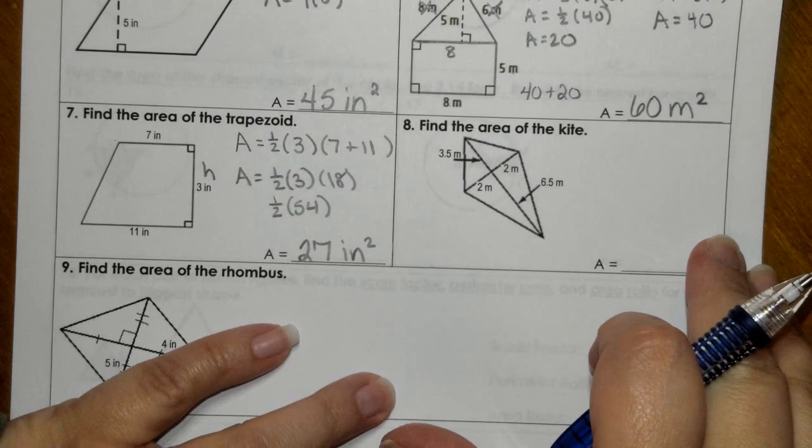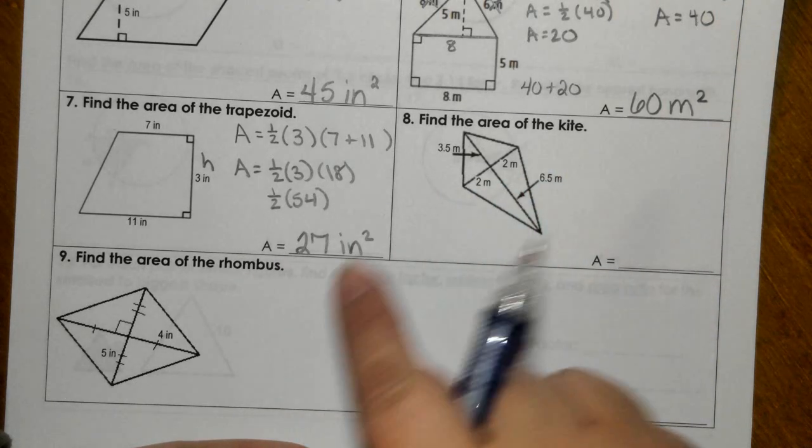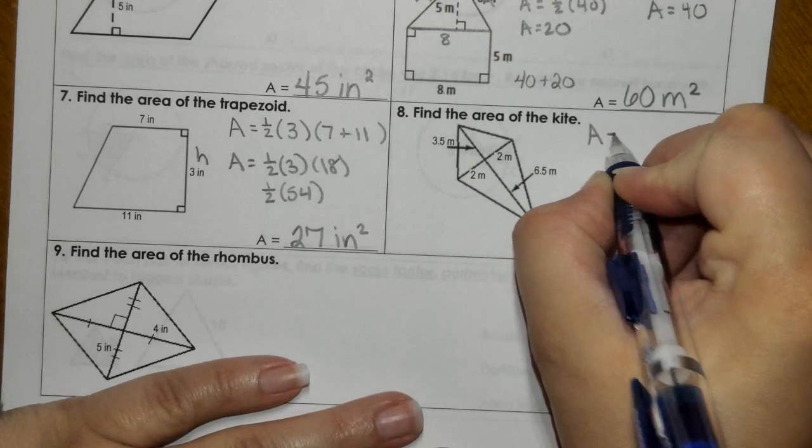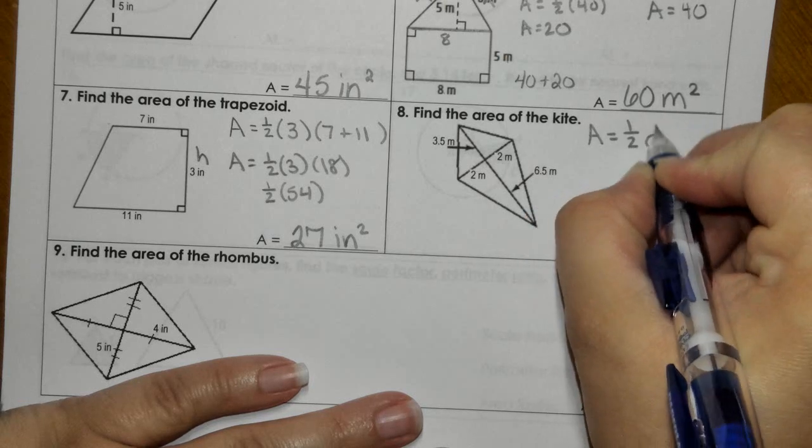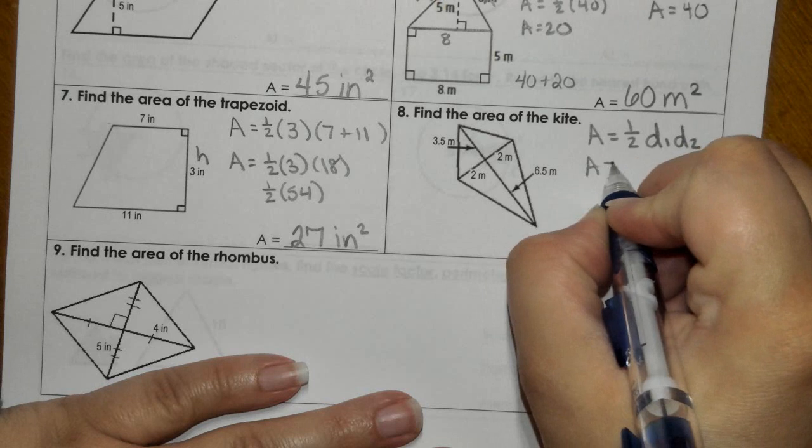In number eight and number nine, we have a kite and then we have a rhombus. So for both of these, we're using the formula one half, diagonal one, diagonal two. So area equals one half diagonal one.